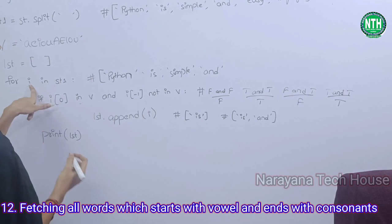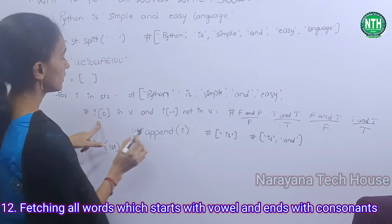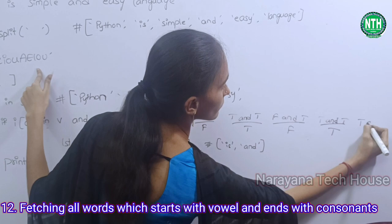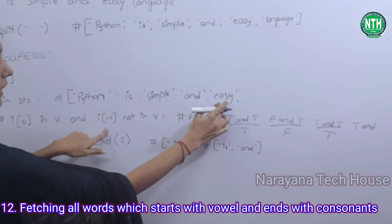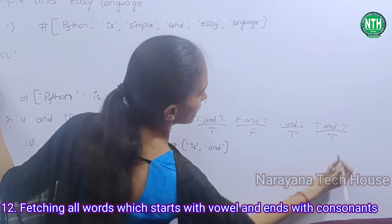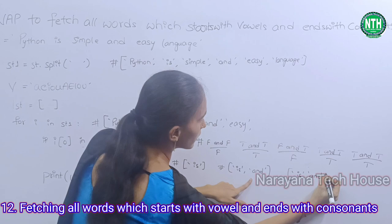Next, i value is 'easy'. i[0] = 'e' — is 'e' in V? True. And i[-1] = 'y' — 'y' not in V? True. True and true becomes true, so it is appending. Before 'is' and 'and' were there, now 'easy' is appended.